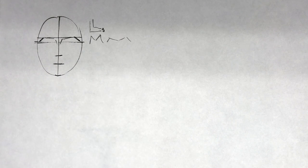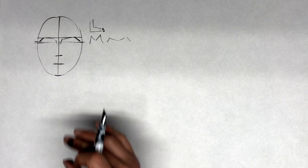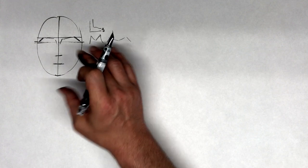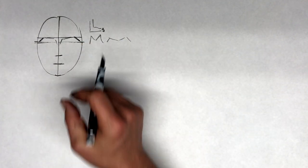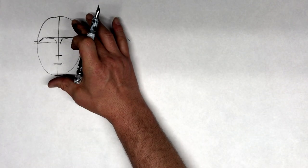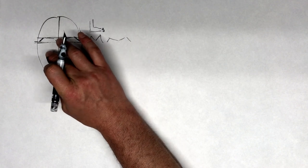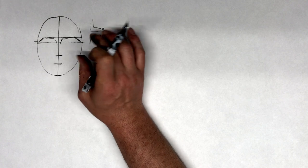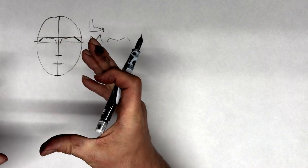This is the architecture upon which the likeness of the head is going to be based. Right now we're dealing with average proportions, but when we try to get a likeness, we want to make sure that this setup is exactly right — exactly represents what's in front of us. Because if the initial architecture is wrong, no amount of finessing the curve of the nostril or the shape of the lip is going to get us to a likeness, because that likeness is sitting on the wrong substructure.